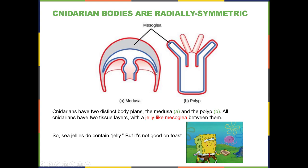This picture shows both the medusa and polyp body forms. In the polyp form, the base attaches to a surface like a rock and the mouth faces upward with tentacles ringing it. The medusa is not attached and the mouth faces downward. In both cases, the gastrovascular cavity is where digestion occurs. Between the endoderm and ectoderm there is a layer called mesoglia, which has a jelly-like consistency containing carbohydrates — that's where the term 'jelly' comes from.